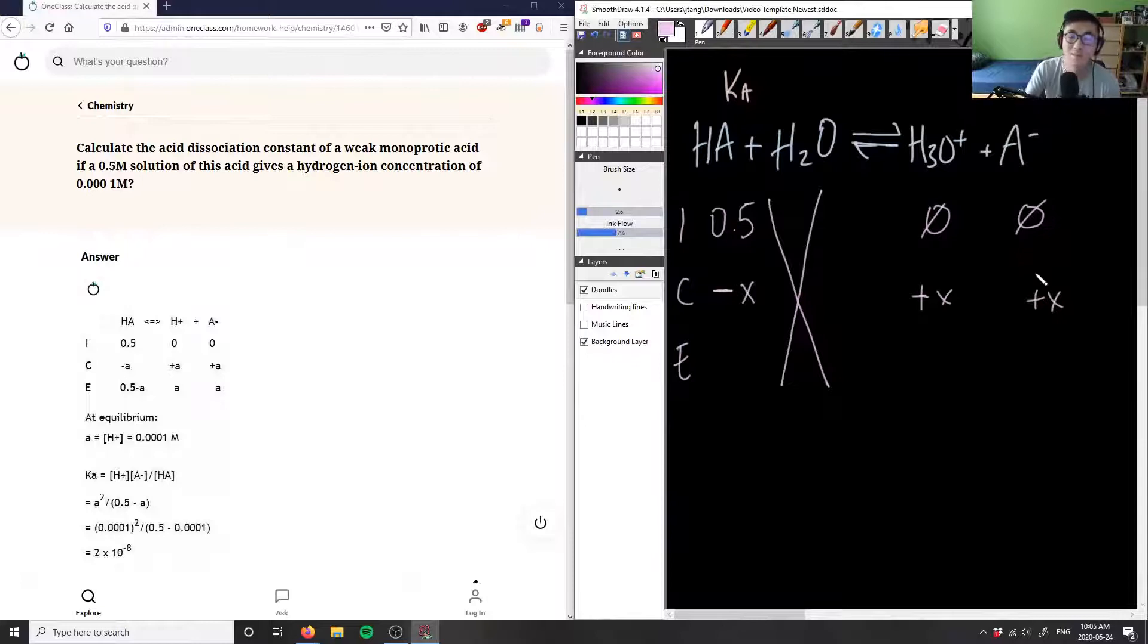I'm going to gain product, I'm going to lose some reactants. So hence why this is the minus sign and hence why this is the positive sign. And at equilibrium I'm going to have 0.5 minus x, positive x here, and plus x here.